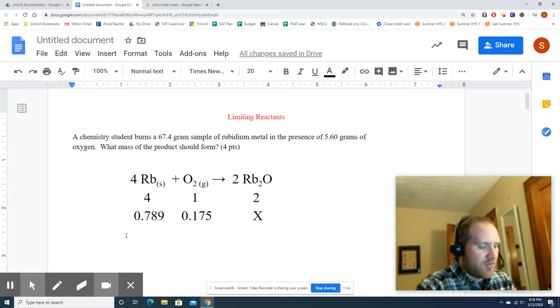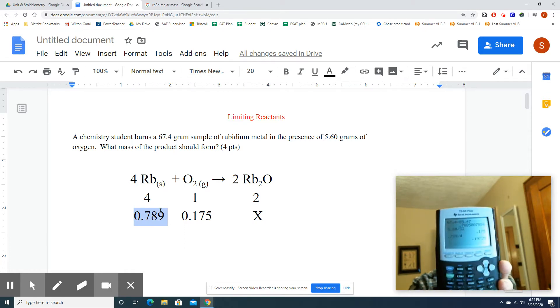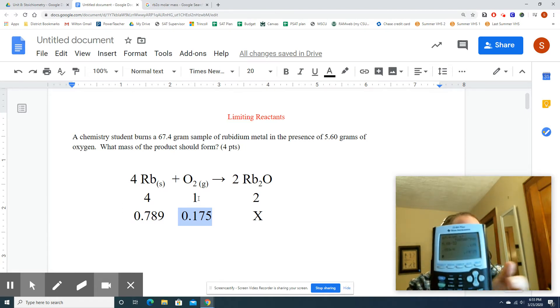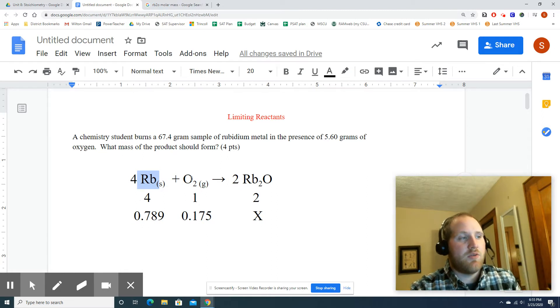Nice and easy. So in this case, I'm going to say 0.789 divided by the coefficient above it, which is 4. And I get 0.197. Now, here, 0.175 divided by 1, obviously going to be 0.175. So which is bigger?